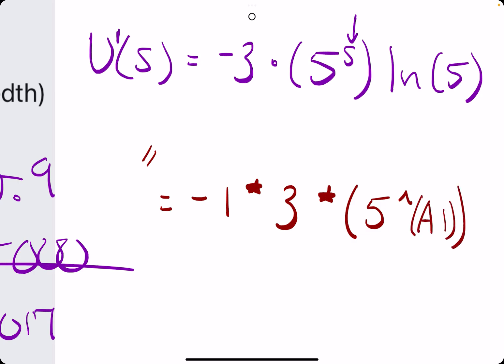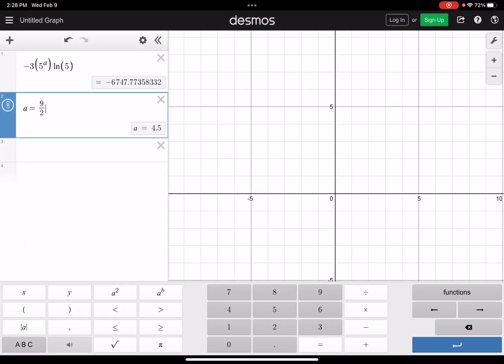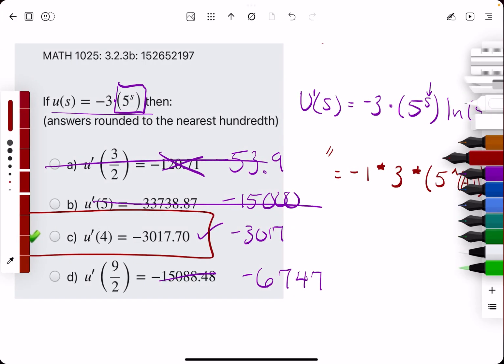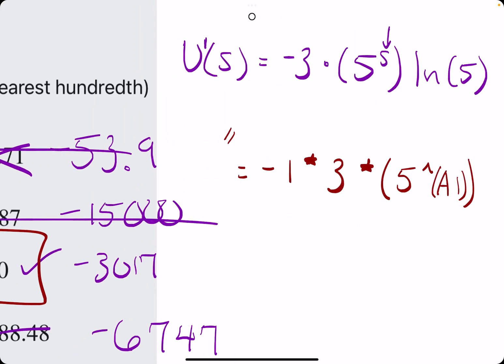And what we could do is use that to be like our A was in Desmos. So A1 would represent the values we're plugging in each time, and then you'll type in another asterisk, and then LN of 5. And then that would be the end of it.